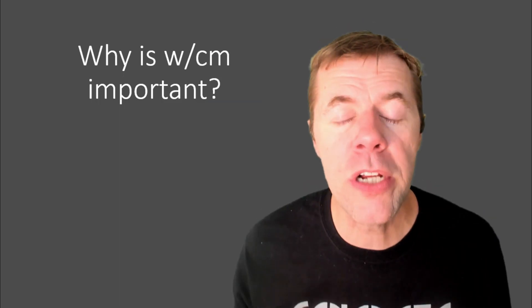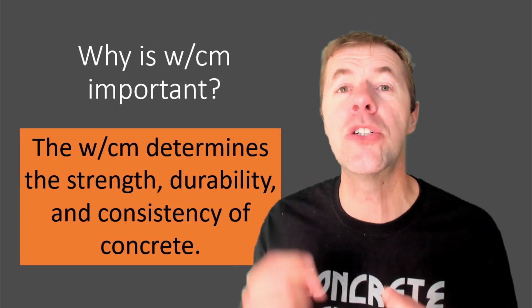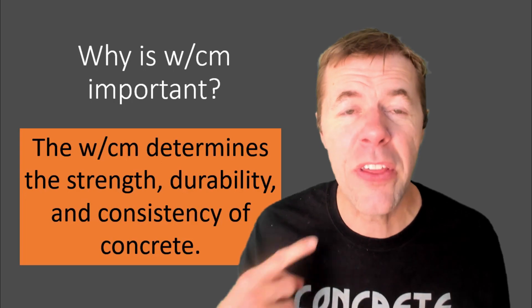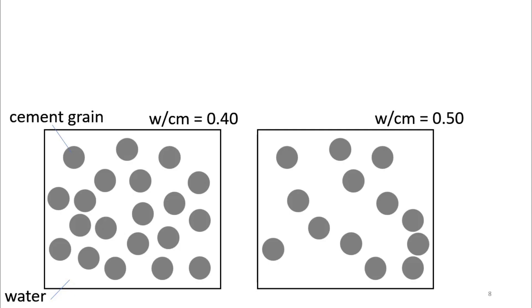Why is the water to cement ratio so important? It determines your strength, your durability, and the consistency of your concrete. Here are some pictures. I've got two concretes, one on the left and one on the right, and they have different water to cement ratios. The left is a 0.40, the right is a 0.50. These little gray dots are cement grains floating around in water. There's more cement grains per water on the left than there is on the right. There's higher concentration of cement grains on the left than there is on the right.